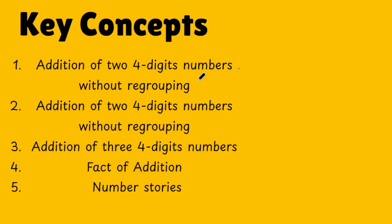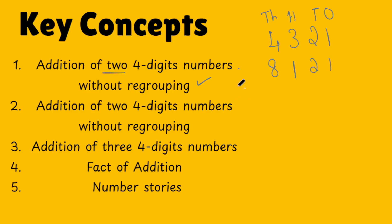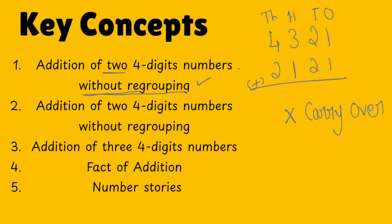The first thing we are going to see is addition of two four-digit numbers without regrouping. For example, if there is 4, 3, 2, 1 — this is a four-digit number: ones, tens, hundreds, thousands. So what we are asking is two four-digit numbers — this is the first, and the second four-digit number will be like this. What do you mean by regrouping? Without regrouping means there is no carry-over. If you add 1+1=2, 2+2=4, 3+1=4, 4+2=6 — is there any carry-over? No. That's what we call without regrouping.